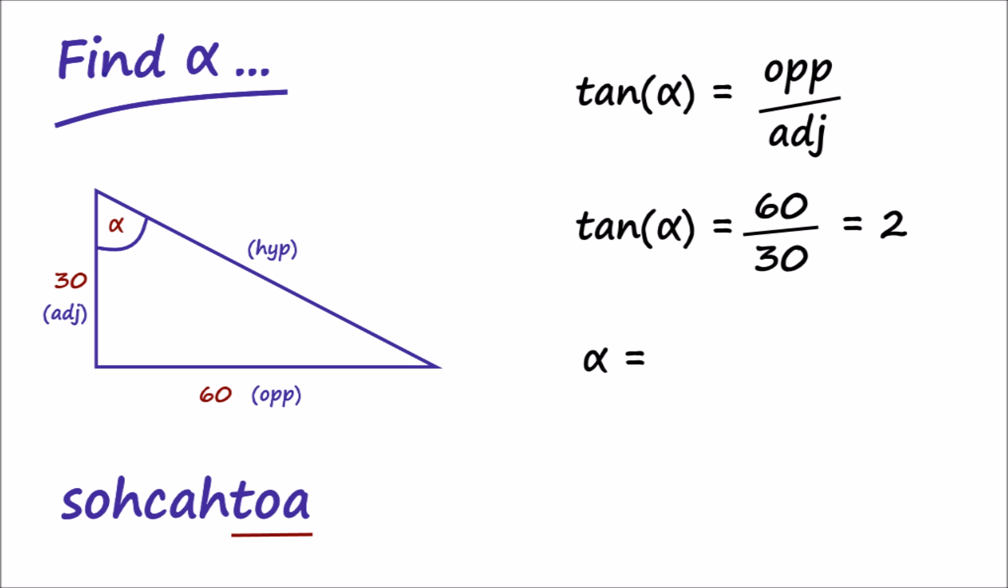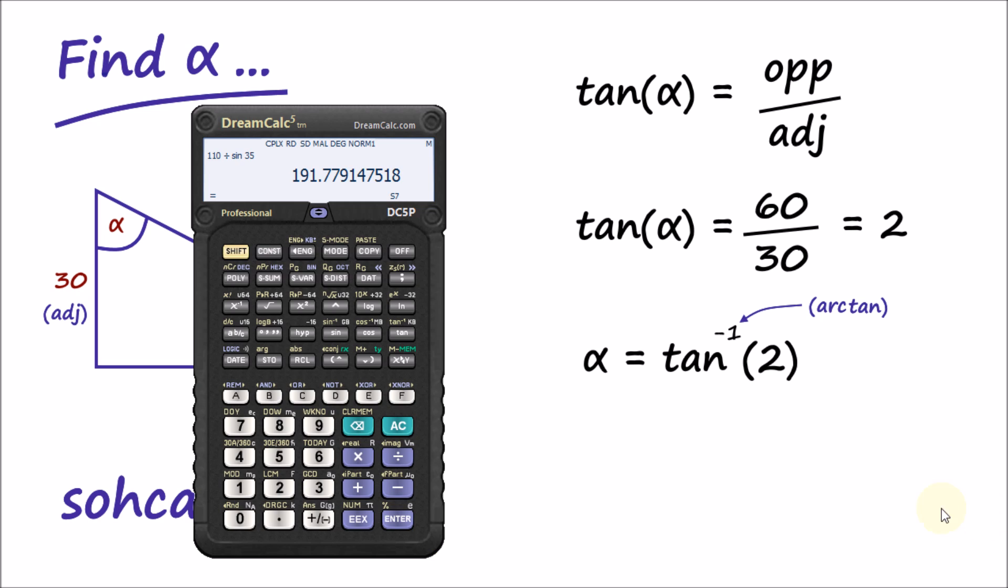The inverse tangent is commonly known as arc tangent, or arctan for short, and is often written using a minus 1 superscript, as follows. Angle alpha equals arctan 2. We can now calculate the result with DreamCalc, but note how we use the shifted tan key to input the arctan function.